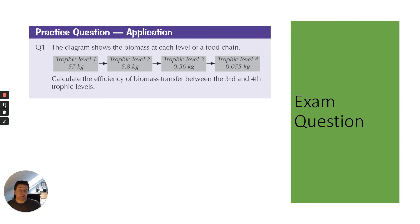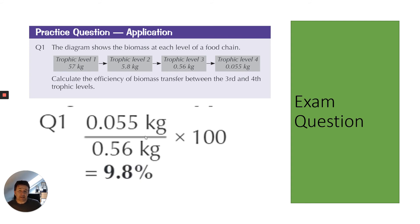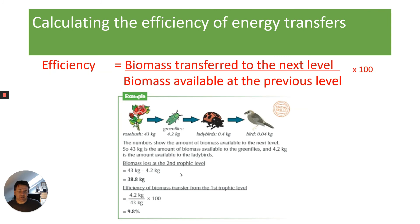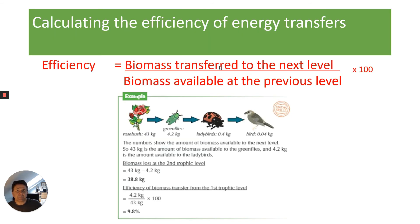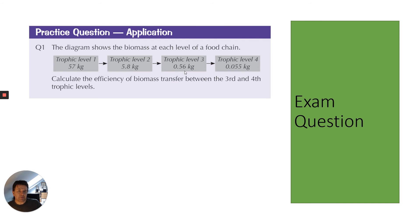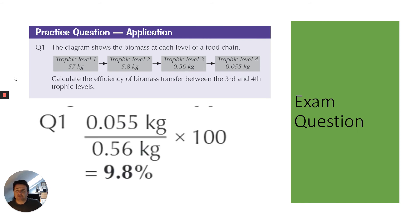Here's a practice question showing the biomass at each level of a food chain. Calculate the efficiency of biomass transfer between the third and fourth trophic levels and show your working — pause the video and have a go. The fourth level is 0.055 and divided by 0.56, times 100, gives exactly 9.8%. You take the biomass transferred to the next level, divide by the biomass available at the previous level, multiply by 100, and that gives you the answer.